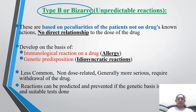Type B is based on the peculiarity of the patient, not on the drug's action. There is no direct relationship to the dose of the drug. It is developed on the basis of immunological reaction of the drug, or genetic predisposition like idiosyncratic reaction. It is less common, non-dose related, generally more serious, and requires withdrawal of the drug. The reaction can be predicted and prevented if the genetic basis is known and a suitable test is done.